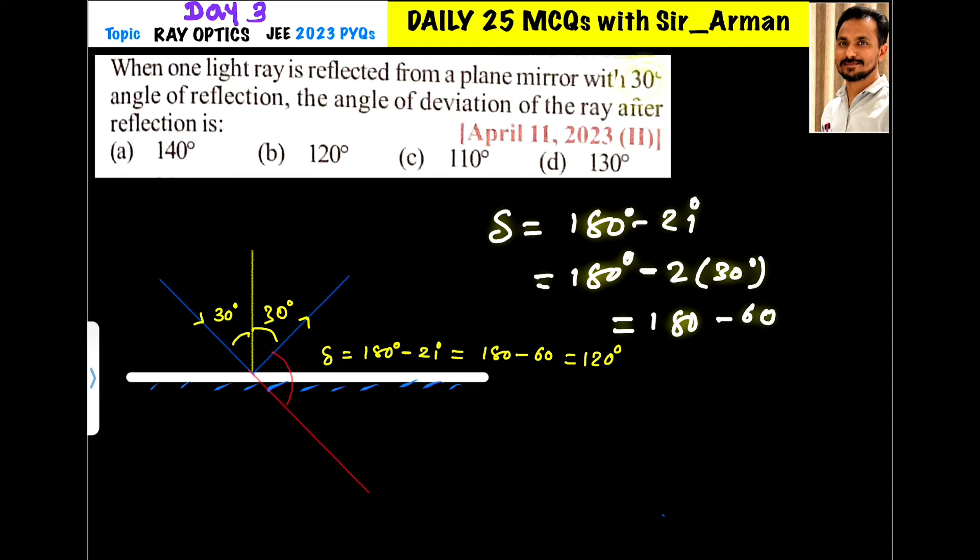So this has become 180 minus 60, so this becomes 120. This thing I have also explained with the figure.